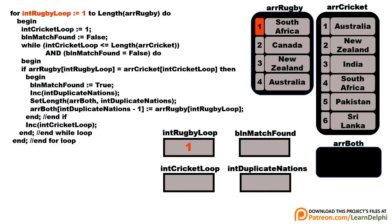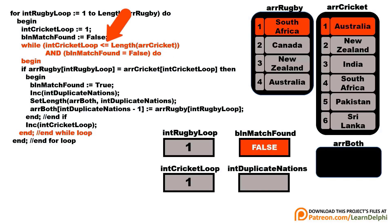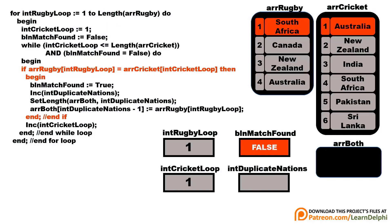The outer loop starts at 1, and its upper bound is the length of the rugby array. It finds South Africa in the first array. Then the counter for the cricket loop is set to 1, and the boolean is set to false. The inner loop checks two conditions before it enters: whether the cricket loop counter is less than the size of the cricket array, and whether the boolean flag is false. Inside the while loop, an if statement checks if the two names match. Australia doesn't match South Africa, so the boolean stays false and nothing is added to the third array.